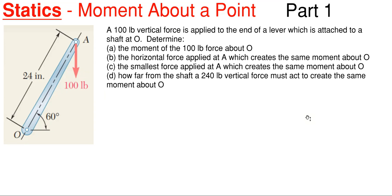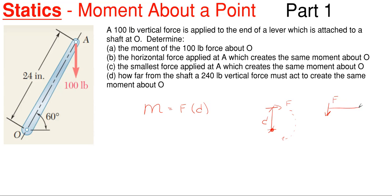What we're going to be covering today is our first video looking at statics — moment about a point. All moment is, labeled as M, is simply a force times a distance, where that distance is the perpendicular distance from the force to the point you're looking at. So moment will always be a rotation about a point. If we have a horizontal force, we need a vertical distance to the point we are looking at. If we had a vertical force, we would need a horizontal distance perpendicular to our force to that point. So always keep in mind: you need a perpendicular distance from the force to the point you are looking at.